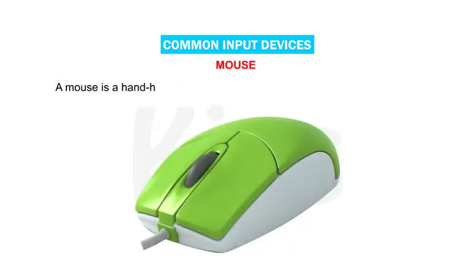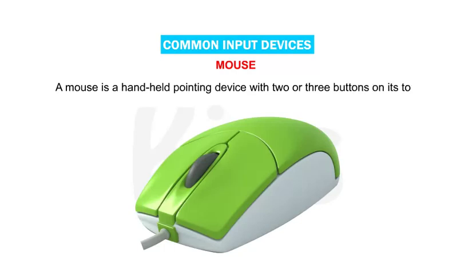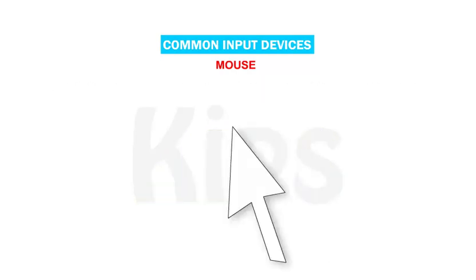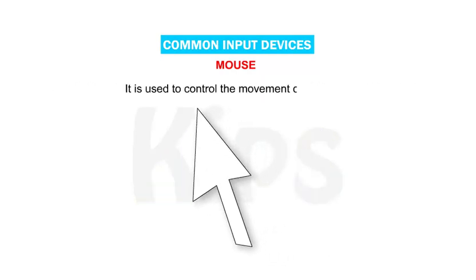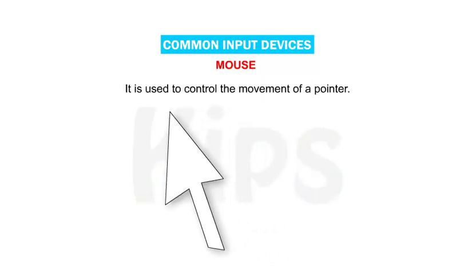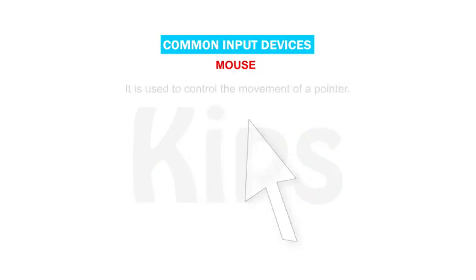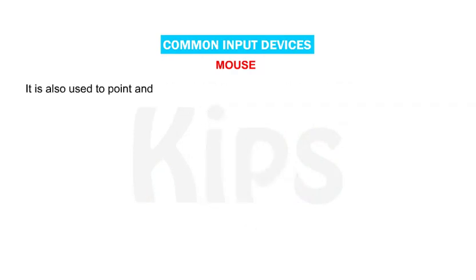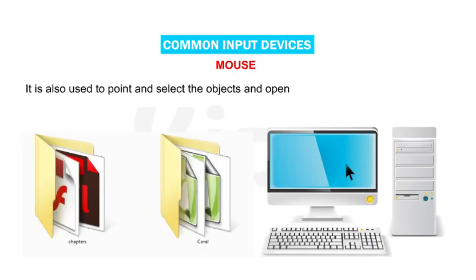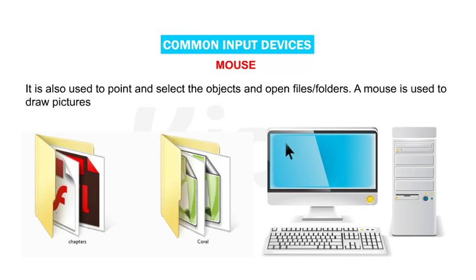A mouse is a handheld pointing device with two or three buttons on its top. It is used to control the movement of a pointer. It is also used to point and select objects and open files or folders. A mouse is also used to draw pictures.